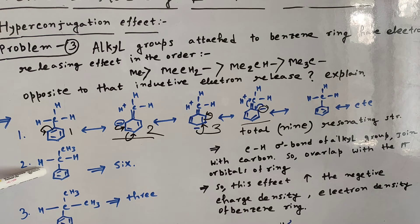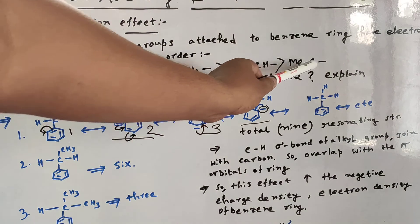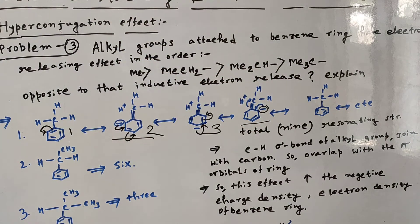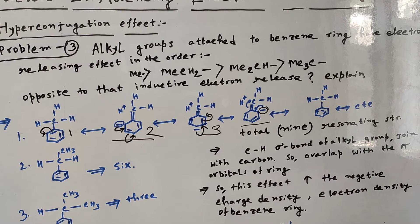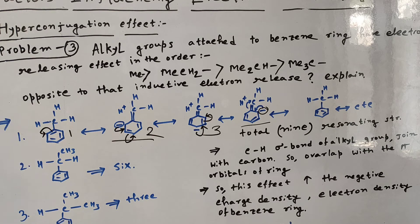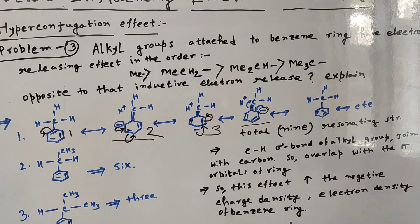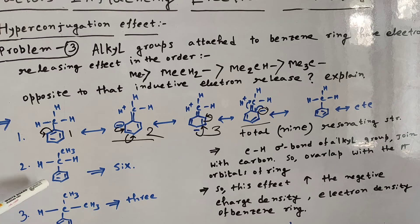When we replace one hydrogen with a methyl group (ethyl group), there are two hyperconjugable hydrogens remaining, giving six resonating structures. Replacing another hydrogen gives only three structures. In the case of tert-butyl (Me₃C), there are no hyperconjugable hydrogens, but the C-C sigma bond overlaps with the pi orbital of the ring, which still increases the negative charge density on the benzene ring.